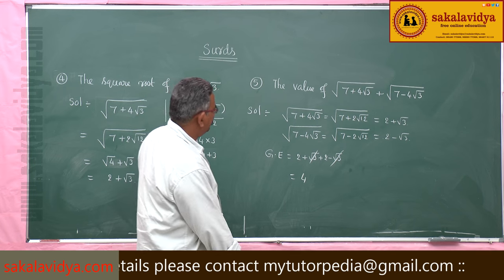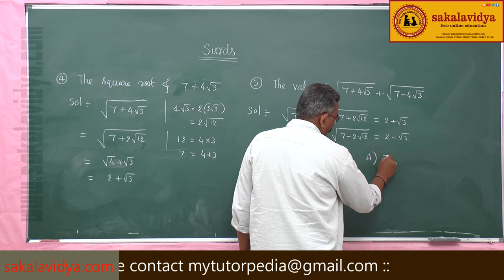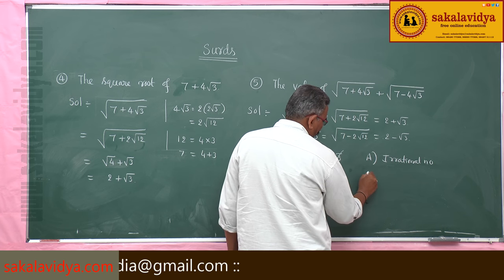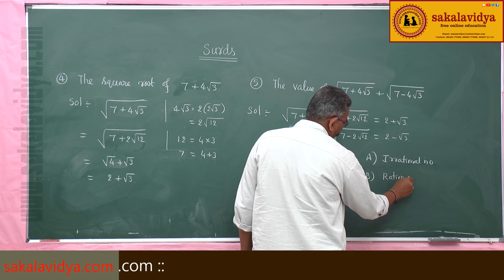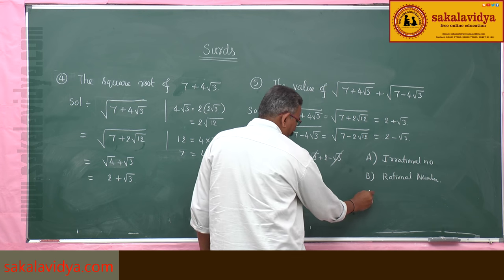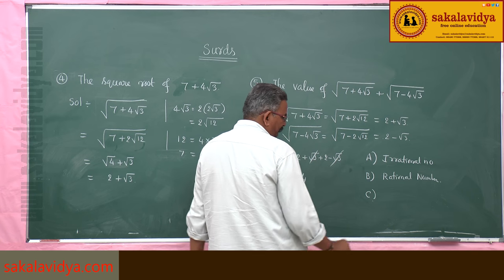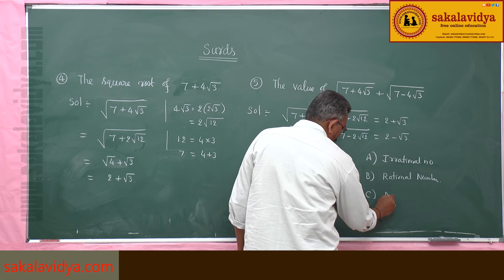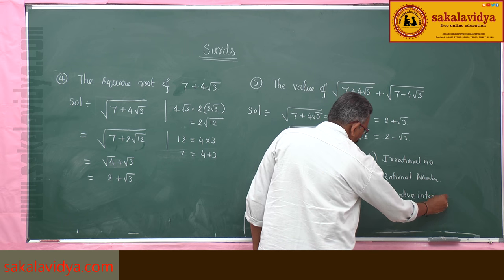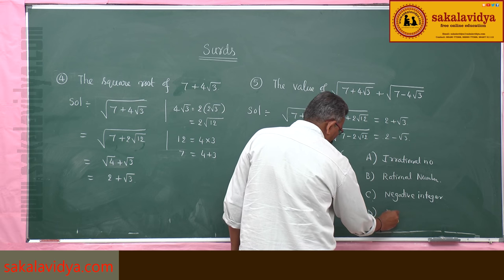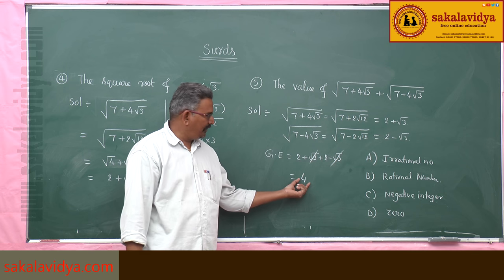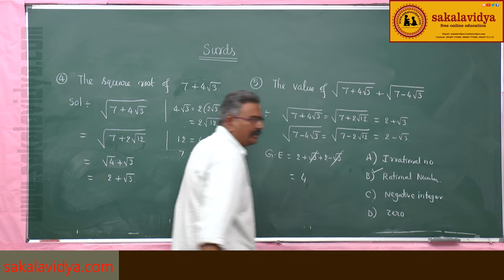The options may be: A) irrational number, B) irrational number, C) negative integer, D) 0. The correct option here is B — wait, since 4 is a rational number, and looking at the options, the answer is a rational number. So option B is correct.